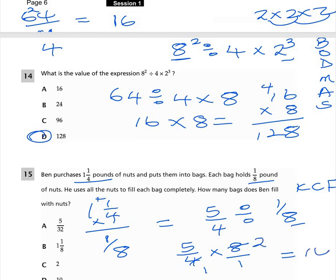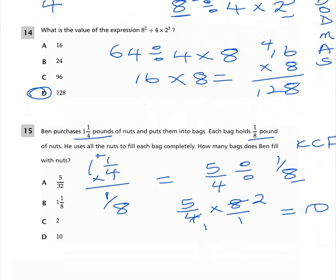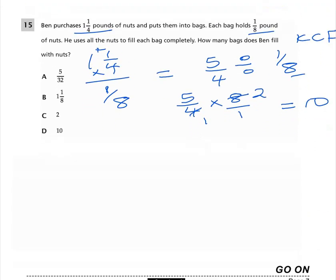5 times 8 is 40, and 4 times 1 is 4, so 40/4 equals 10. The right option is D, which is 10.